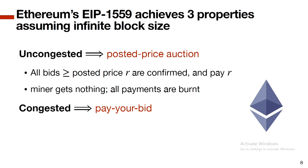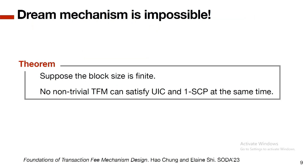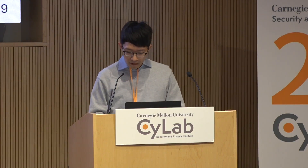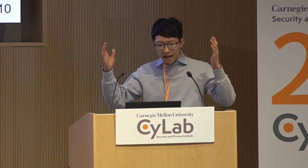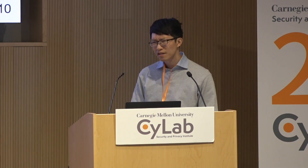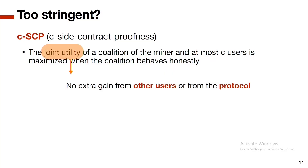Can we have a dream mechanism achieving all properties? Unfortunately the answer is no. We show that if the block size is finite — limited supply — then no non-trivial mechanism can satisfy both properties. The only mechanism satisfying both is one that always rejects everyone, which makes the blockchain useless. So maybe C-SCP is too stringent.